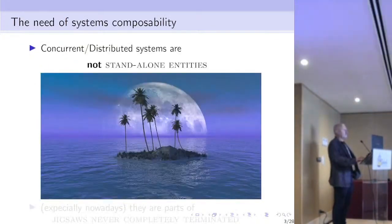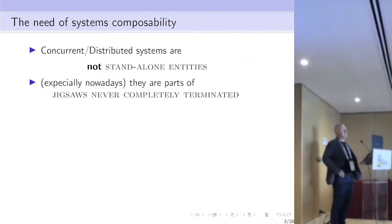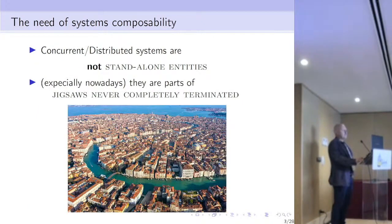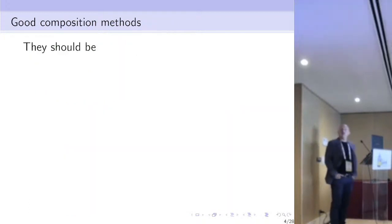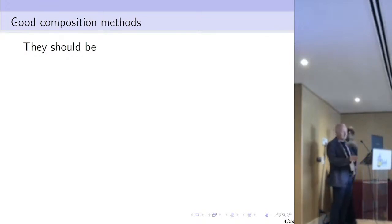We all know that concurrent and distributed systems are not standalone entities, and especially nowadays they are part of a never-ending jigsaw. There is no universal law, but I think we could all agree that a good composition method — to compose two or more systems and get a new one with different capabilities — should have certain properties.